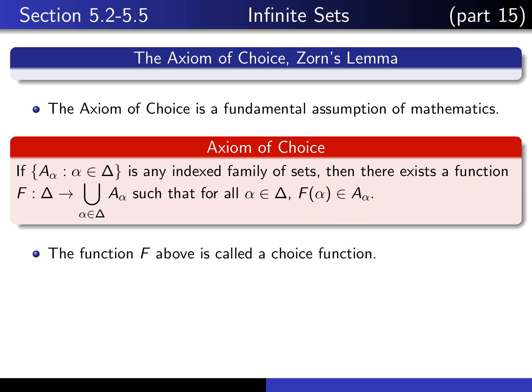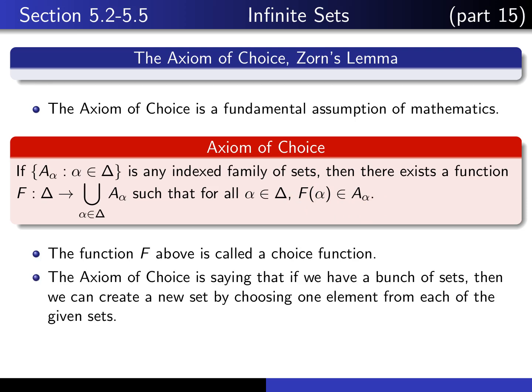The function F in the statement of the axiom of choice is called a choice function, and essentially what it's saying is that if you have this family of sets, A sub alpha, then you can create a new set by choosing one element from each of the A sub alphas.